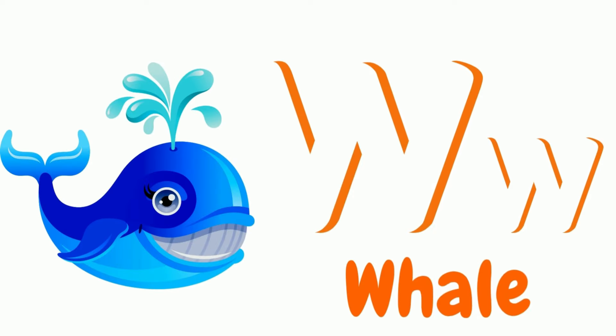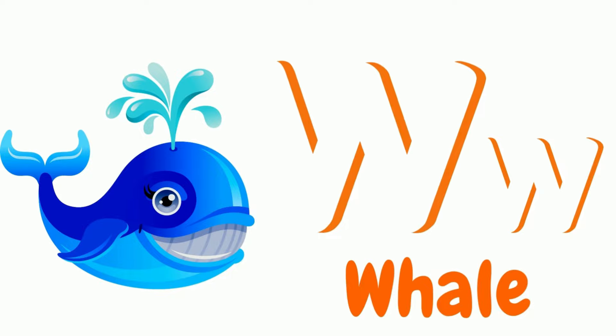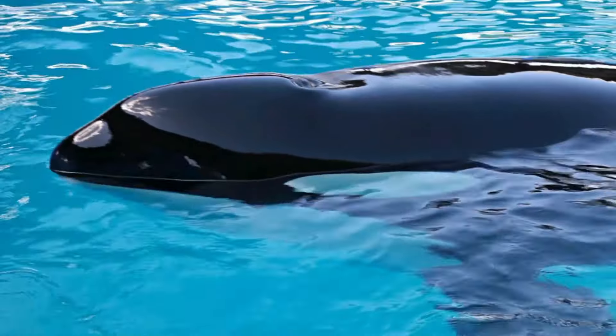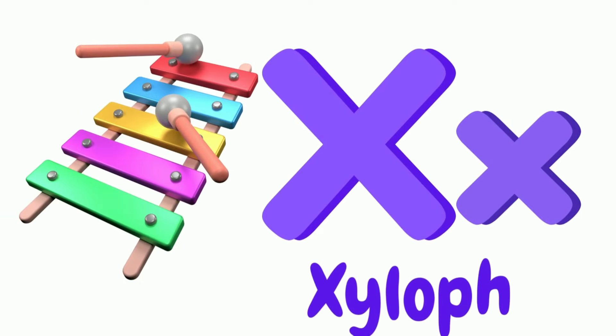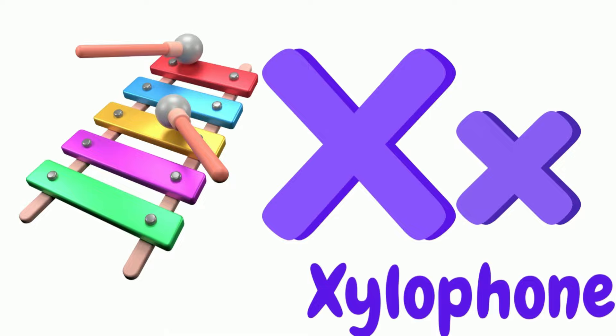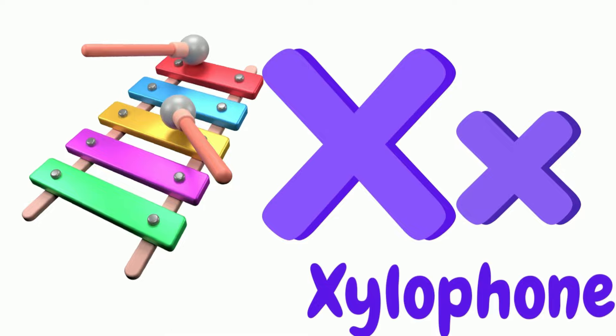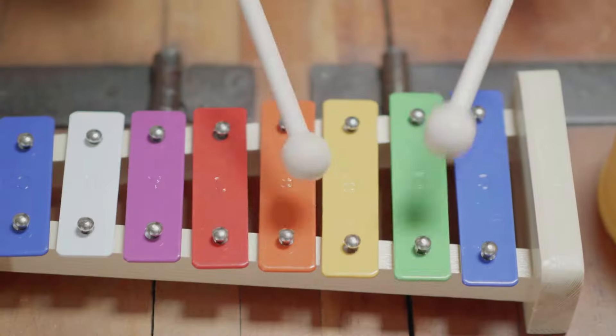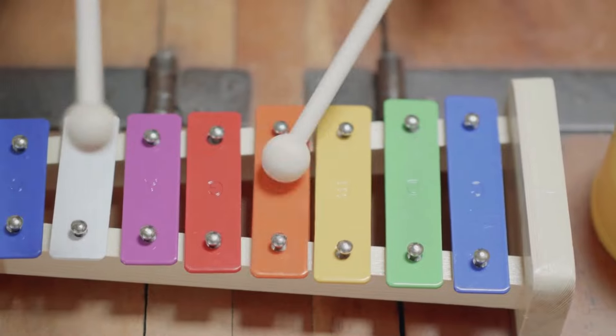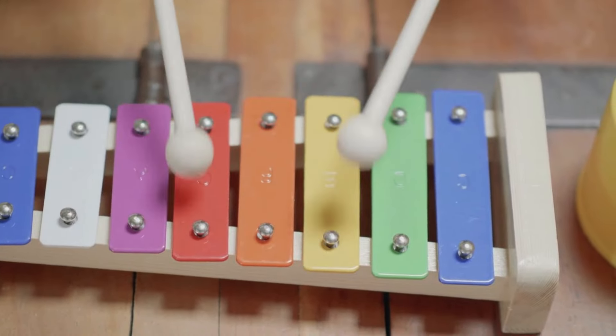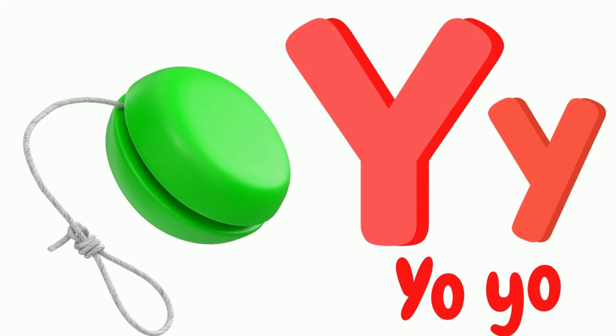U is for Umbrella. Umbrella, umbrella. This is an Umbrella. Umbrella, umbrella. V is for Violet. Violent, violent. This is a Violet. W is for Whale. Whale, whale. This is a Whale. Whale, whale.